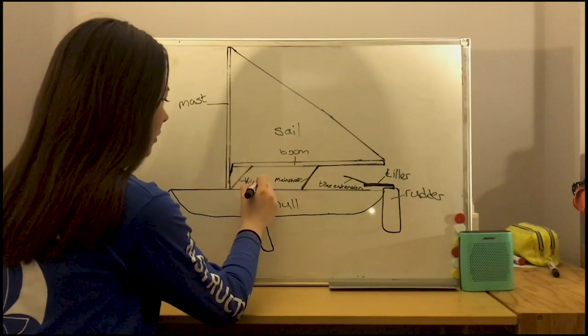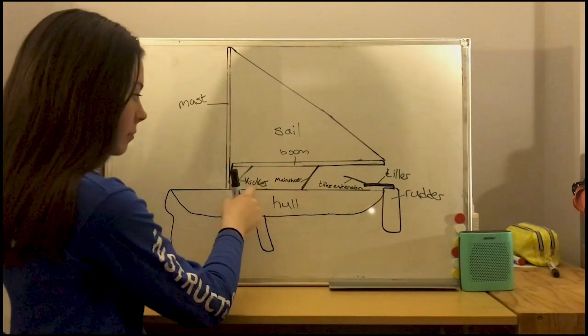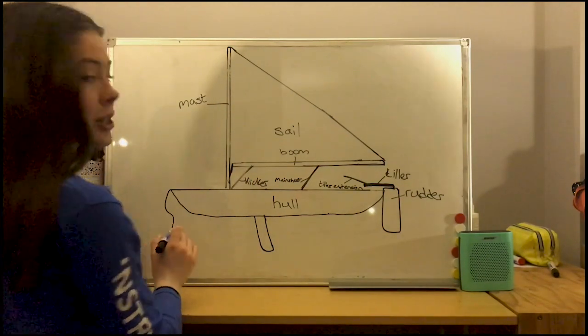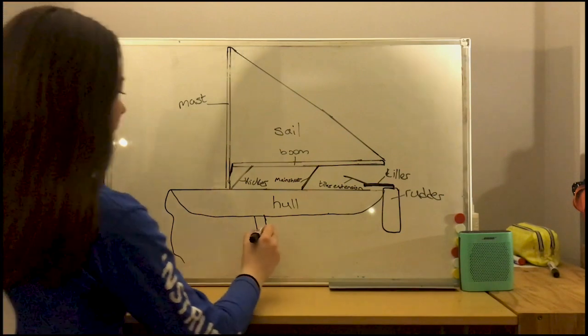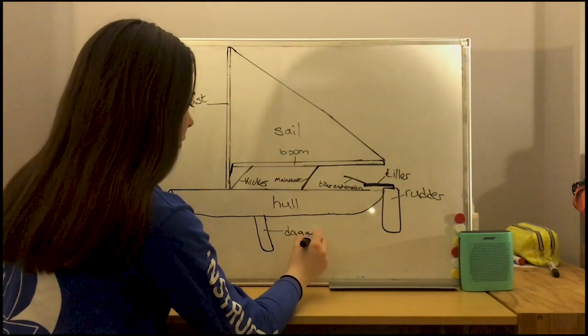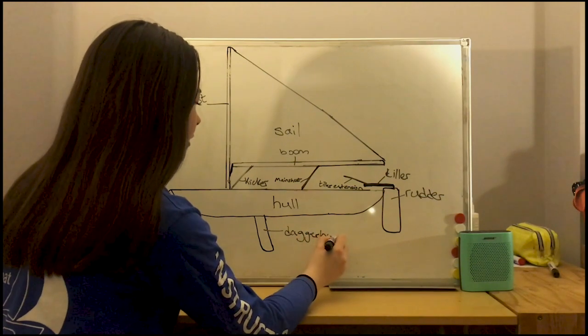Here we have our kicker and that pulls our sail in nice and tight especially for windy days. And then here we have our dagger board. It stops us from drifting so great for steering.